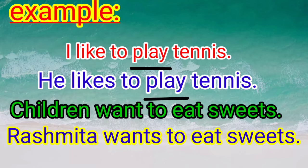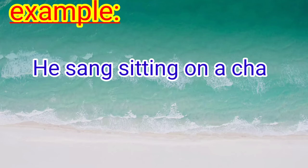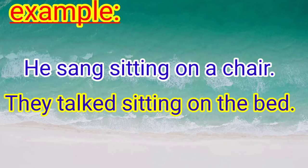Now look at the last two sentences: 'Children want to eat sweets' and 'Rashmita wants to eat sweets.' Here 'want' changes into 'wants' — these are the finite verbs because they carry the tense. But 'eat' does not carry the tense, so it is a non-finite verb. Also: 'He is sitting on a chair' vs 'They talk sitting on the bed' — 'sitting' is the same in both sentences, so 'sitting' is a non-finite verb, as it does not change as per the subject or person.